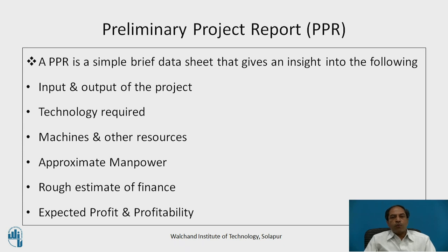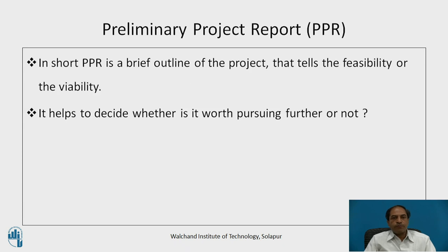Profit is generally the sales price minus the cost, whereas profitability is the percentage of the total capital employed. Profits and profitability are both different. For a good and sustainable project, we need both profit and profitability on an increasing scale.